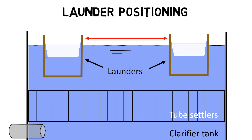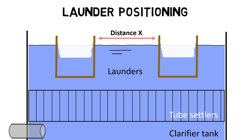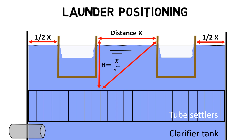As a rule of thumb, the distance between effluent launder to effluent launder should be x. The distance between basin wall and effluent launder should be half x. And the distance between the top of the tube settler and the top of the effluent launder should approximately equal the distance between two launders divided by the square root of 3, divided by 2.